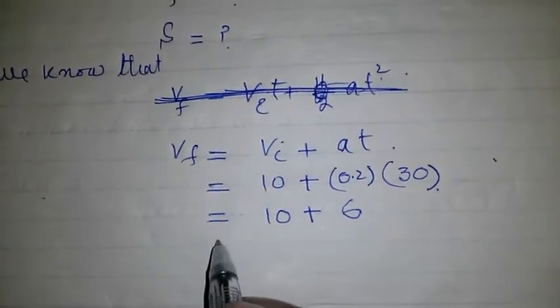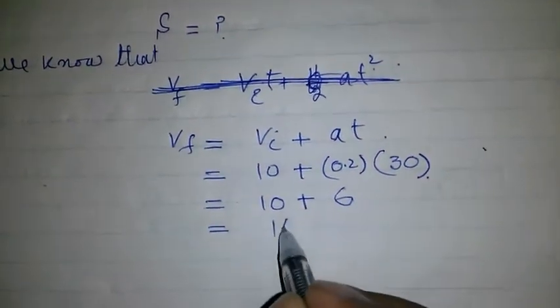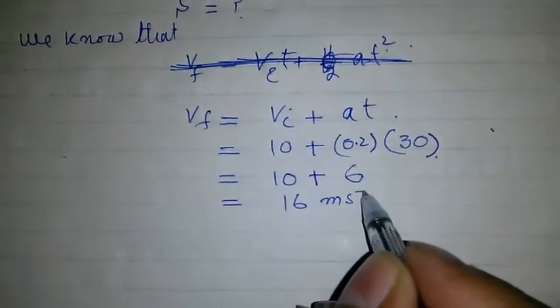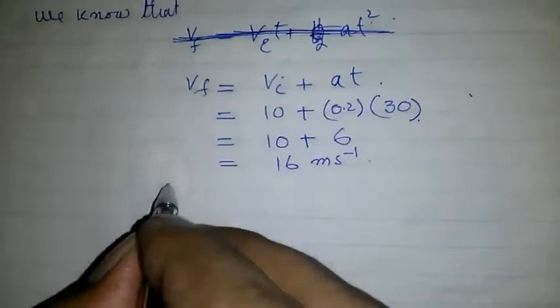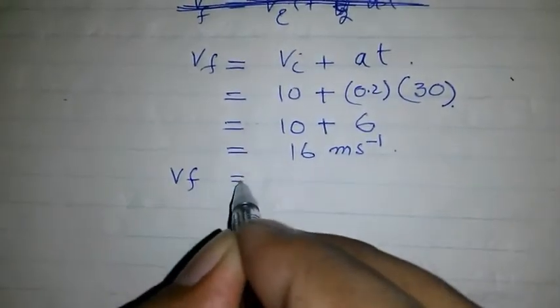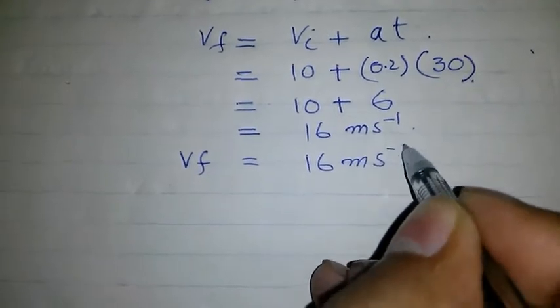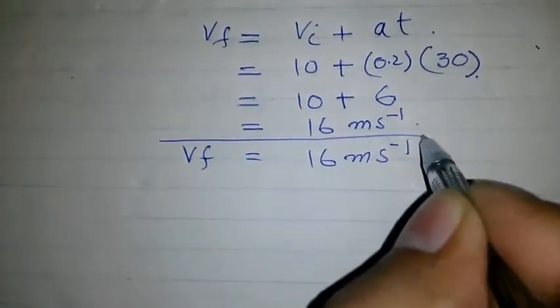Which is equal to 16 meter per second. So Vf is equal to 16 meter per second. That's one answer.